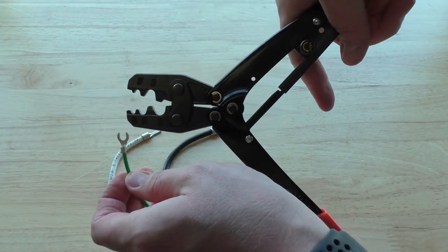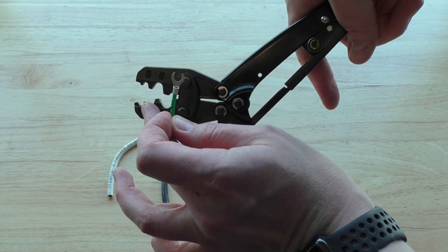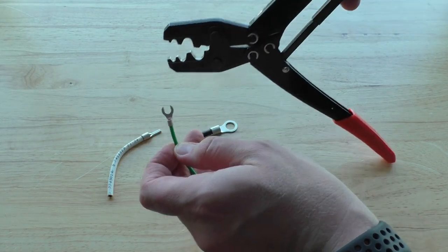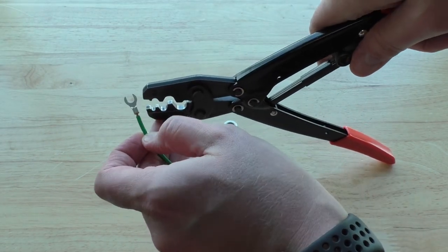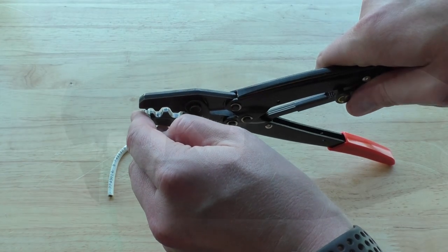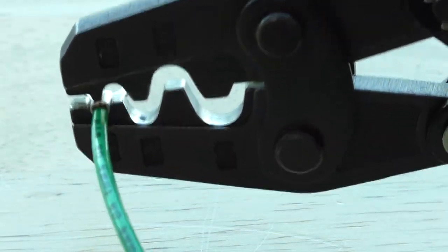We're going to start off with our AMB2-5, which is a 16-14 gauge non-insulated fork terminal. Going to line it up in that first 16-gauge slot and give it a crimp.